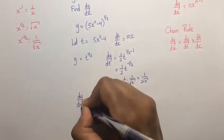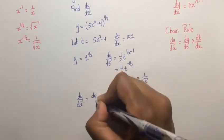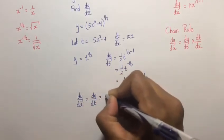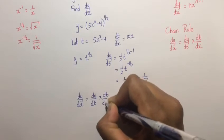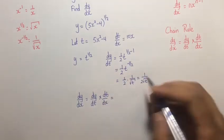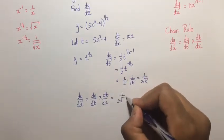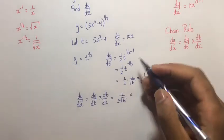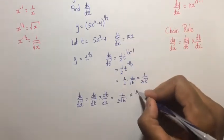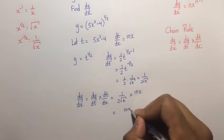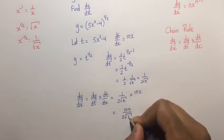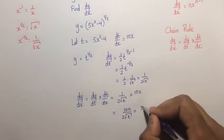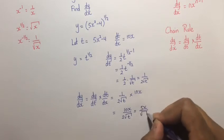we get that dy/dx is equal to dy/dt times dt/dx, which is equal to 1/(2√t) multiplied by 10x. So that is equal to 10x/(2√t), which is equal to 5x/√t.